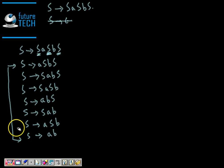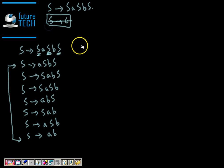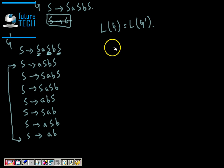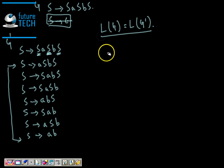Once these production rules are added, we can eliminate the S → ε null production. If the previous grammar was G and the new grammar is G', the language remains unaffected — L(G) = L(G') without any doubt.